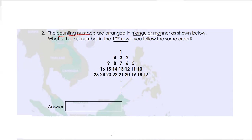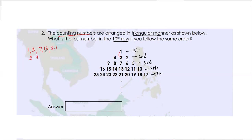There are two or three ways to do this question. They're talking about the 10th row. So this is my first row, second row, third row, fourth row and fifth row. If you look at the center numbers, you get 1, 3, 7, 13, 21. The differences are 2, 4, 6, 8 — increasing by 2 each time. So we need to find the last number by continuing until the 10th row. The differences go 10, 12, 14, 16, 18. So the 6th center number is 21 + 10 = 31, then 31 + 12 = 43.